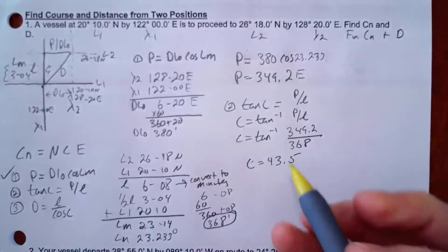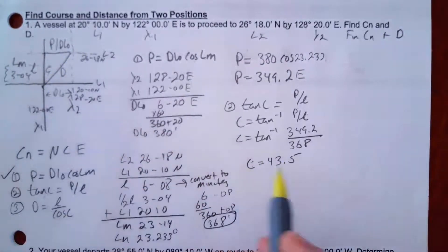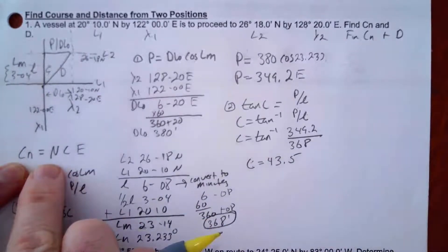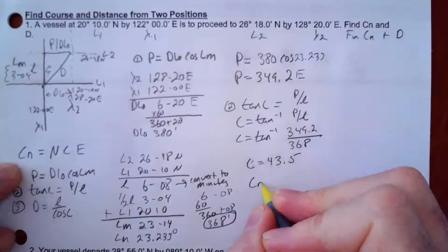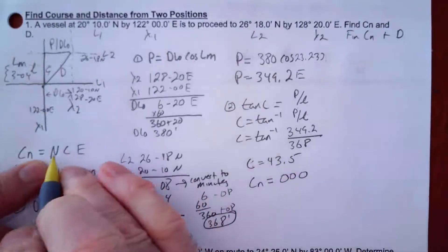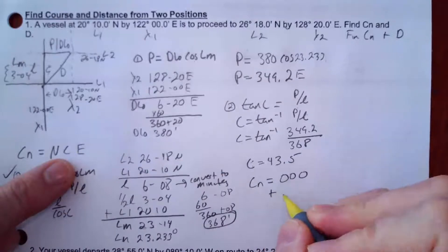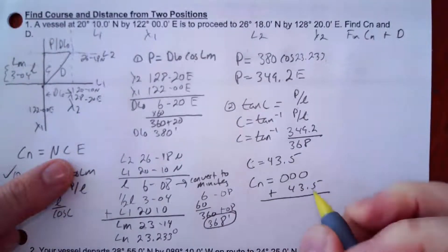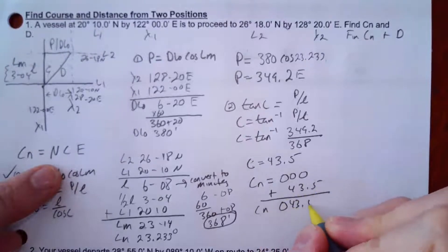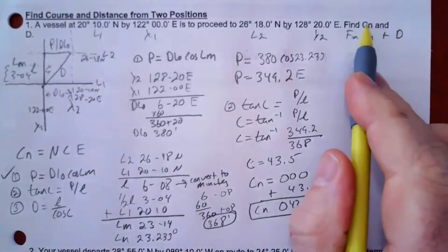Now I need to convert C to C(N) — course from north. Since I'm going northeast, using my formula: C(N) = 000° + 43.5° = 043.5°. That is my course from north, C(N). So I've answered the first question.